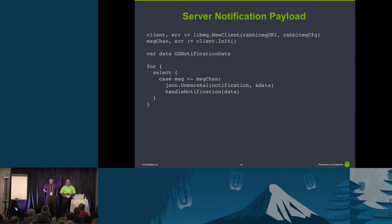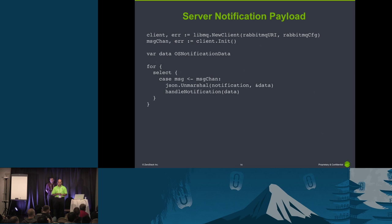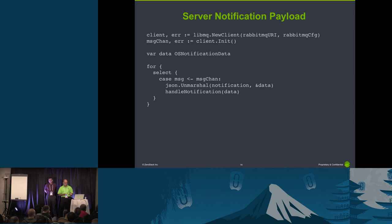Once you have a channel on which you are receiving messages from RabbitMQ, this is how you parse them. You get messages on the message channel you created. All these messages have a very standard format — a basic format and a payload. Here's a simple example of how to unmarshall the data. This part is in the open source: what the OS notification data looks like. We walk through it and handle each message.